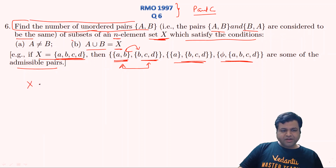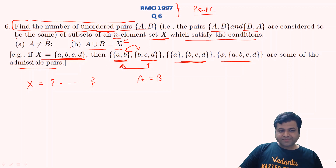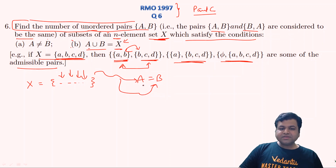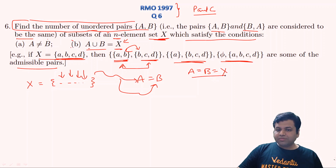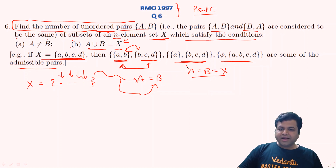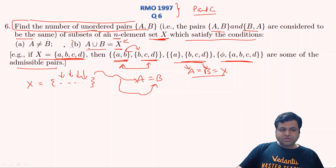First, let's understand: if X has N elements, in how many cases will A equal B while also satisfying A ∪ B = X? If A ∪ B = X, every element of X must be present in A or B or both. When will A equal B? Only when both equal X — that is the only possibility. Because if we skip even a single element from A, and since A equals B, that element will also be absent from B, so the union cannot equal X. So there is only one case when both A and B equal X.